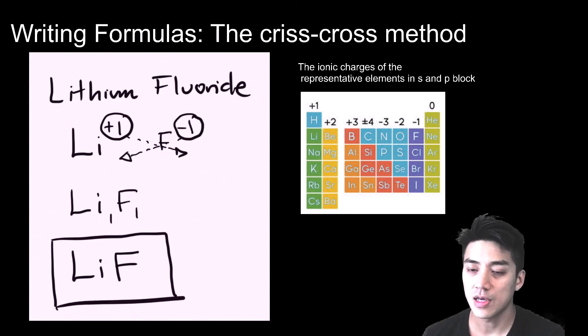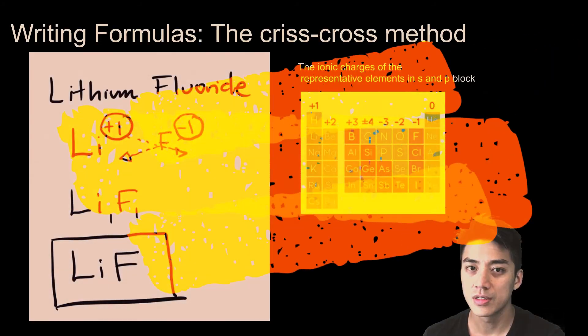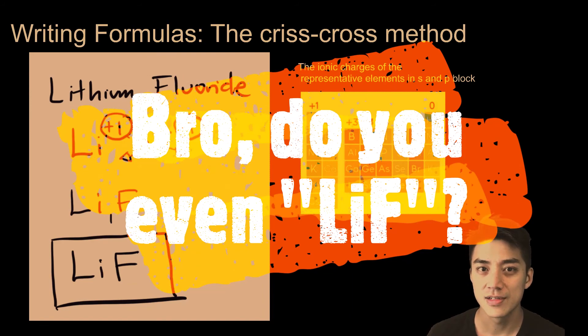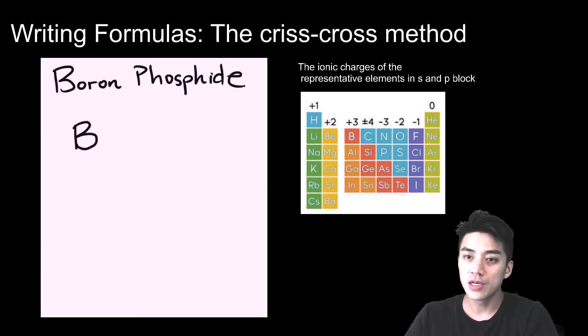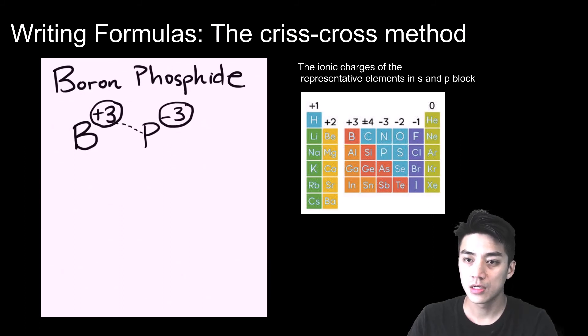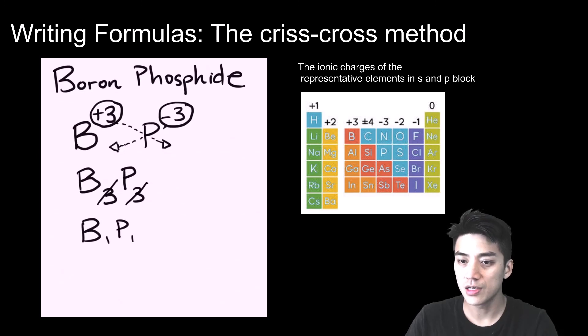Boron phosphide: boron has a symbol B, charge is plus three. Phosphorus is phosphide, charge is negative three. Criss-cross the two charges and let's write it out, we've got B3P3. So the subscripts are the same, they're going to simplify to B1P1, and then omit the ones we've got boron phosphide as BP.